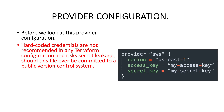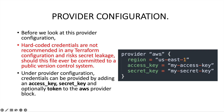In the provider block we hard-code the access key and secret key using the arguments access_key and secret_key. You provide the respective access key and secret key values, and that gives Terraform the necessary permission to create resources. You can also provide an optional token in the provider block.